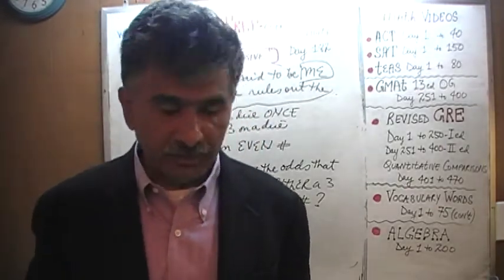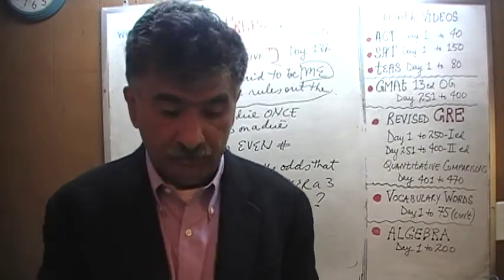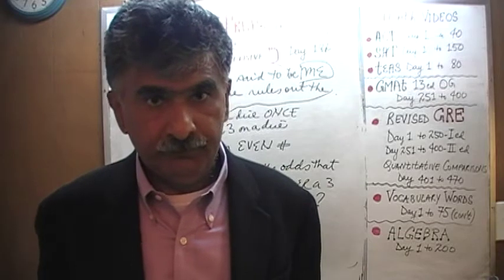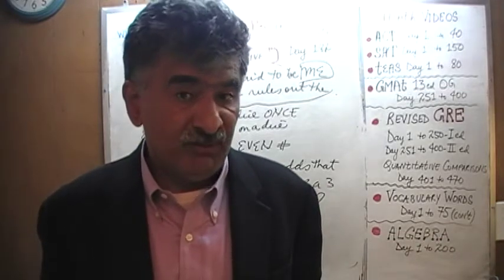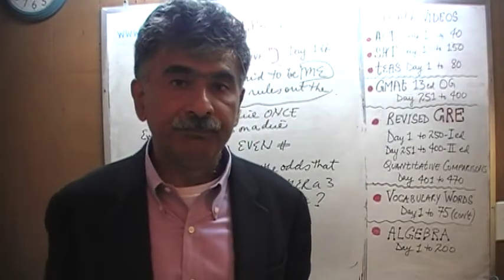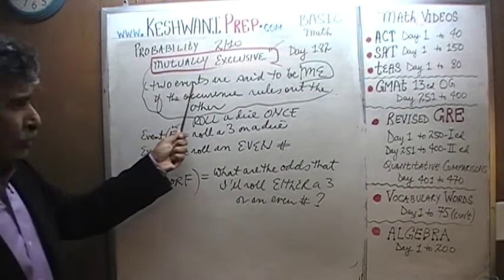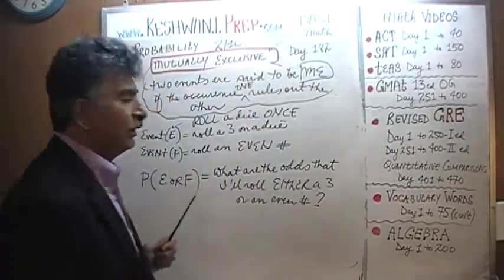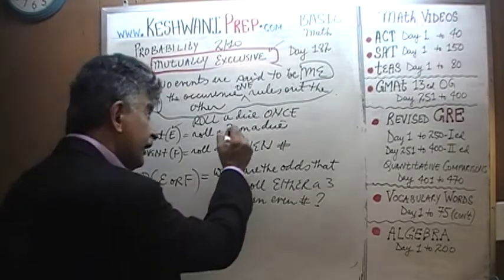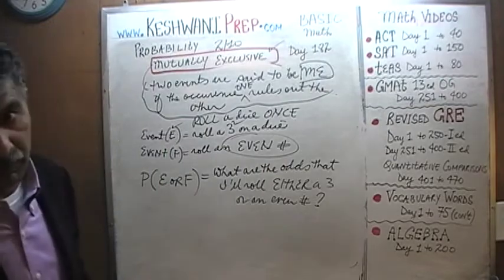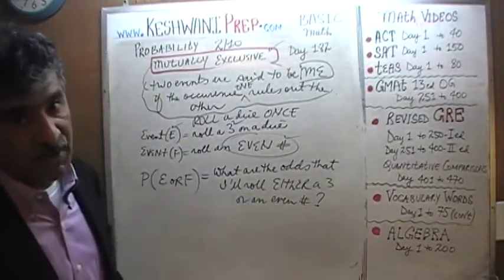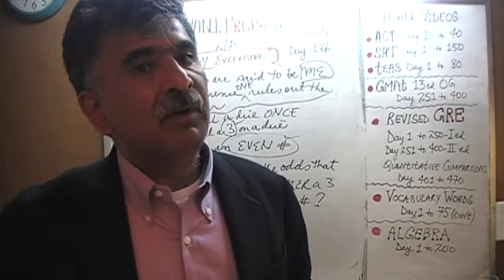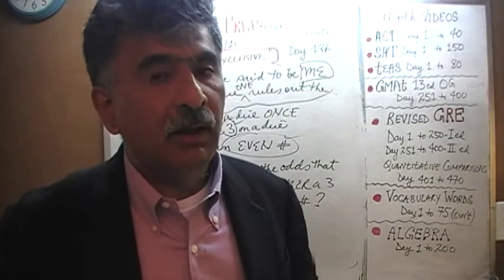If I roll a die and you see an even number, then what are the odds I rolled a 3? There is no chance I could have rolled a 3 if the number is even. Two events are said to be mutually exclusive if the occurrence of one rules out the other. If you roll a 3, it is not possible to have rolled an even number, and vice versa. One negates the other — if one event happens, it makes the other impossible.